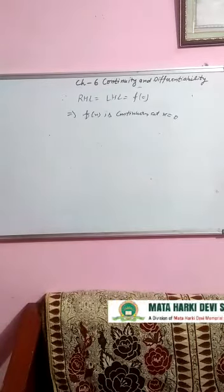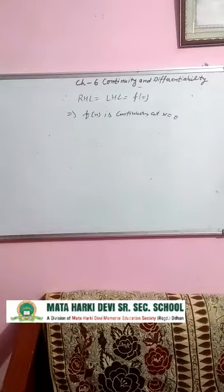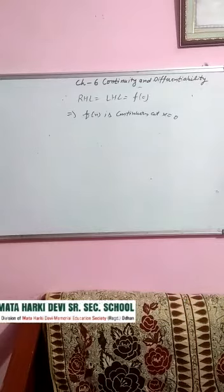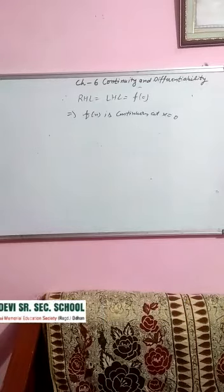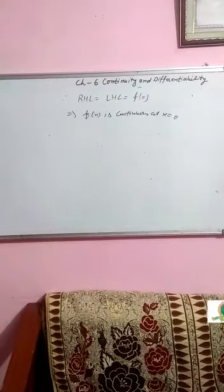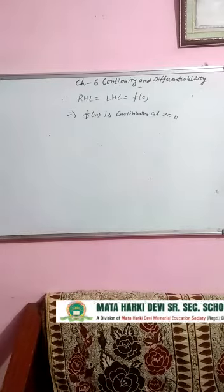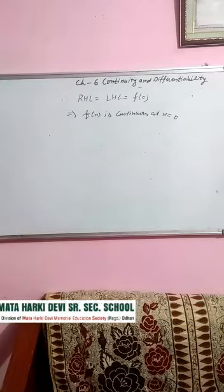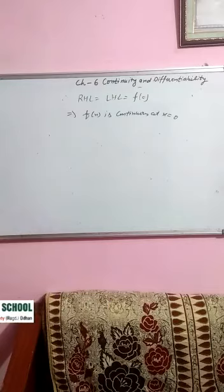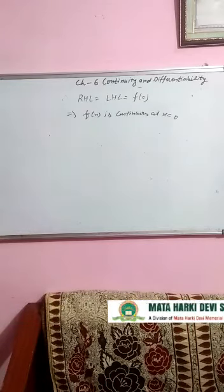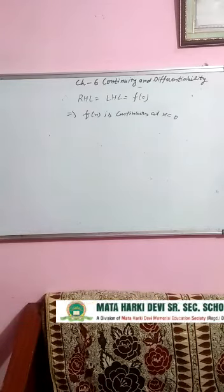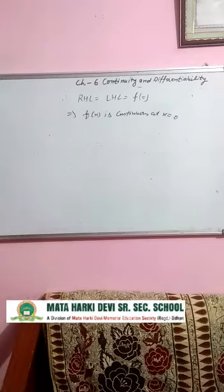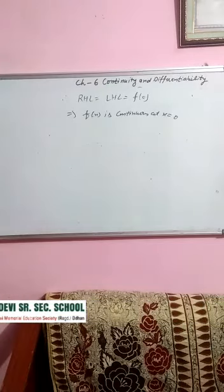Toh dekho hamari right hand limit bhi 2 aayi, left hand limit bhi 2 aayi, aur function at x equal to 0 ki value bhi 2 di hui hai. Left hand limit, right hand limit, aur function ki value at that point — teeno equal aa gayi. Toh function kya ho gaya? Continuous ho gaya at x equal to 0. Toh humne kya karna tha? Prove karna tha — aur hum ne prove kar diya.